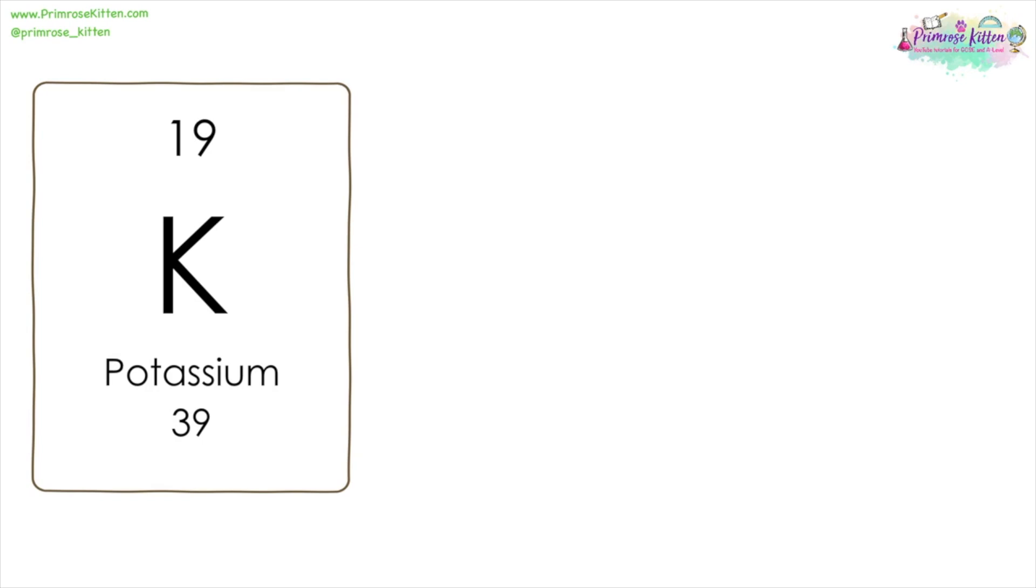On the periodic table you will see lots of boxes like this. This tells you all about the elements. This is the element's name, the symbol, and there are two numbers: this is the atomic number, and this one is the mass number.